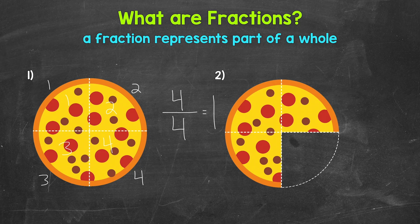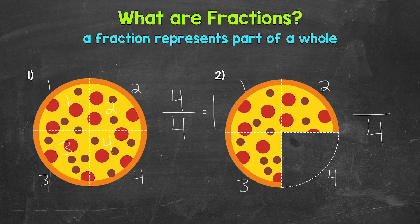Let's move on to number two. We can tell right away that we do not have the whole pizza left. So let's write a fraction to represent this amount. How many equal parts was the whole pizza divided into? That's our denominator: one, two, three, four equal parts. Now we need the numerator — how many pieces of the pizza do we have left? One, two, three. So that's our numerator. Our fraction is three over four, which we say three fourths. That tells us we have three pieces of pizza left out of the four total pieces — three out of four parts.